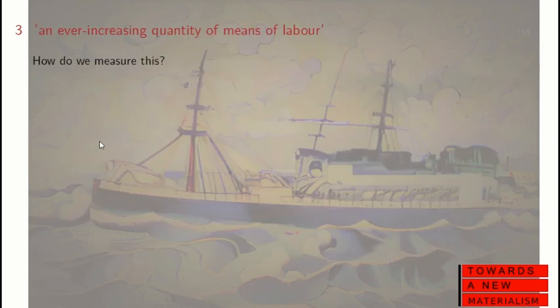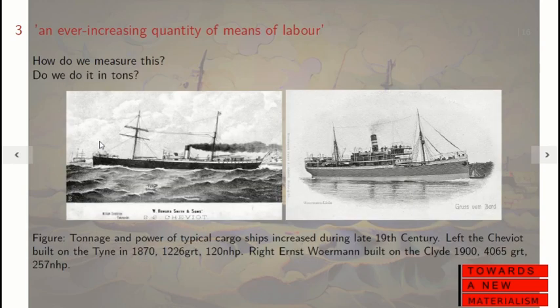So how are we to measure this statement about an ever-increasing quantity of the means of labour? Do we measure it in tonnes? For some things that's perfectly reasonable. On the left is a typical cargo ship just after Marx's writing — a ship launched in 1870, taken from the database of Tyne-built ships. On the right is a typical cargo ship launched on the Clyde in 1900, 30 years later. The first ship was just over 1,200 tonnes; the ship on the right, 4,000 tonnes. This is the type of shift in scale which had occurred over 30 years — steamships started small and got ever bigger.